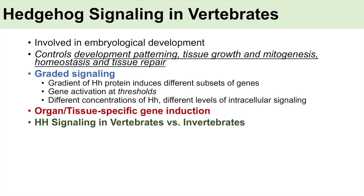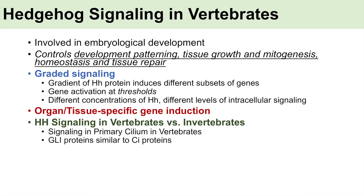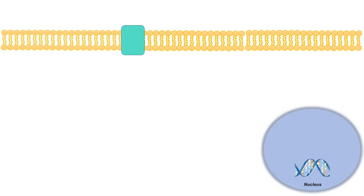So what are some of the differences between vertebrate and invertebrate hedgehog signaling? In vertebrates, hedgehog signaling occurs in the primary cilium of the cell. The GLE proteins — which are known as CI proteins in invertebrates — are more specialized in vertebrates. GLE2 is more utilized as a transcriptional activator, and GLE3 is usually more utilized as a repressor of transcriptional activity. The primary cilium has microtubules associated with it.